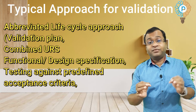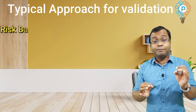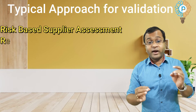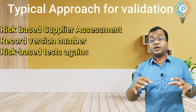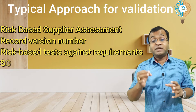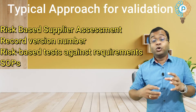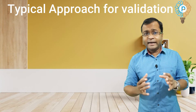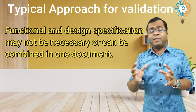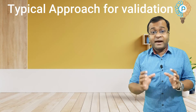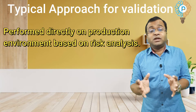For Category 3 validation: testing against predefined acceptance criteria and a validation report are essential. A risk-based approach for supplier assessment is used. Record the version number and verify the installation by following an approved installation procedure. An SOP must be prepared for routine user purposes. Functional and design specifications may not be necessary and can be combined in one document. Validation may be performed directly in the production environment based on risk assessment.